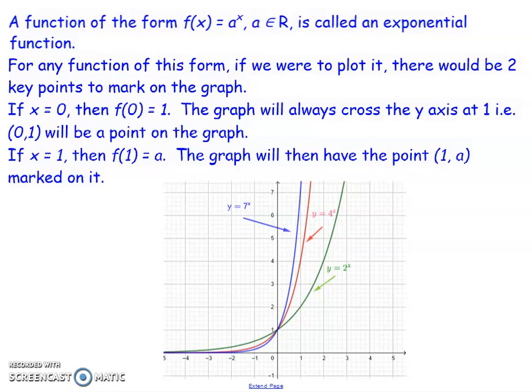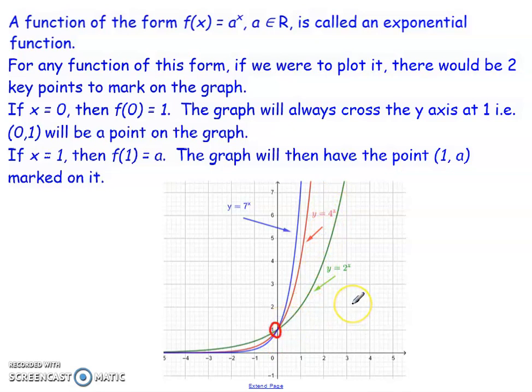We should know by now that any function of the form f(x) = a^x, where a belongs to the set of real numbers, is called an exponential function. For any function of this form, if we were to plot it, there would be two key points we want to mark on the graph. The first one being the y-intercept, so when x equals 0. f(0) for any exponential function is always going to equal 1, so the graph will always cross the y-axis at the point 1. If you look here, I've got several different ones drawn, all of them cross at y equal to 1.